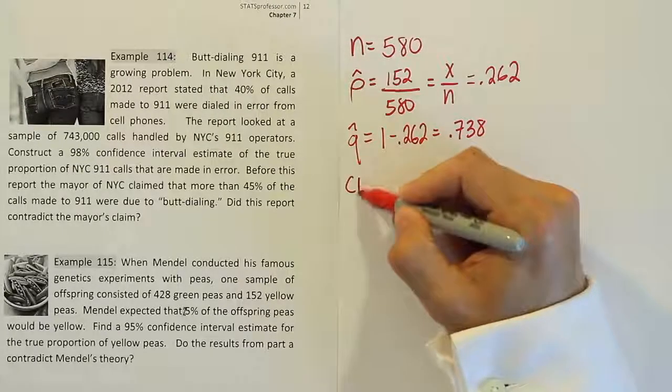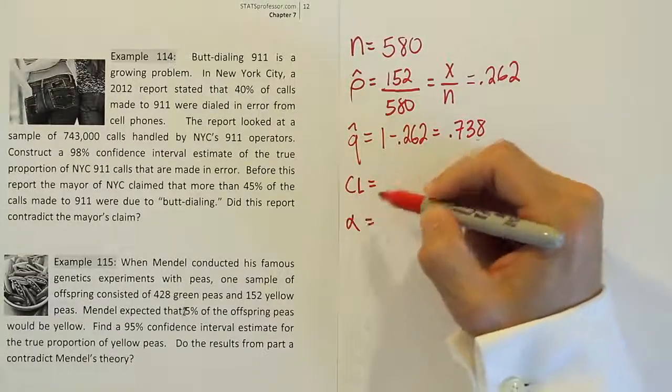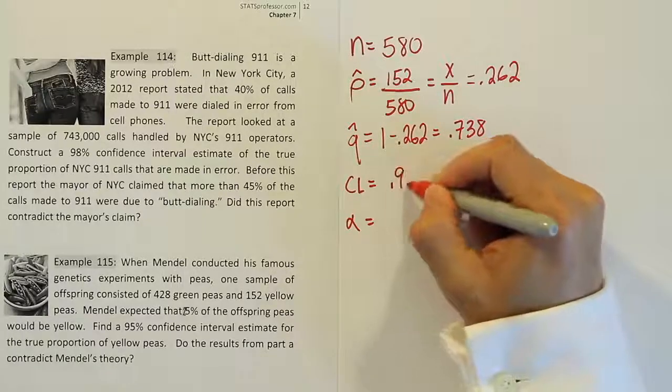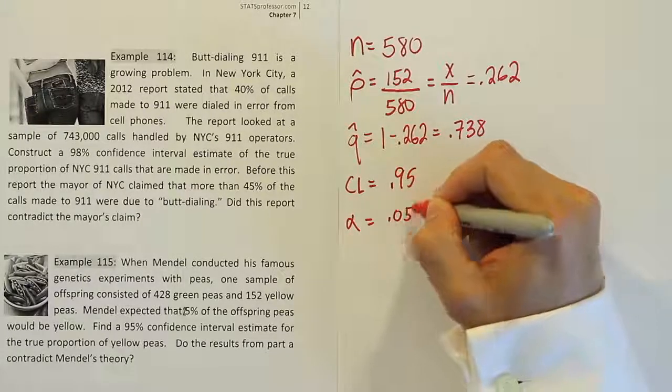And then from there, we're going to have the confidence level and alpha. The confidence level in this problem is 0.95, and alpha, of course, is 0.05.